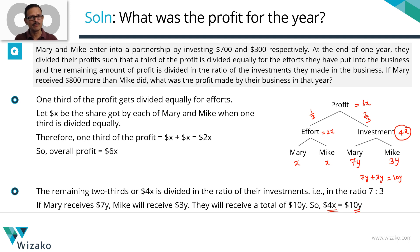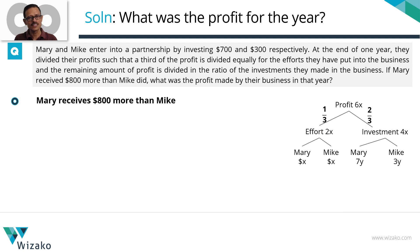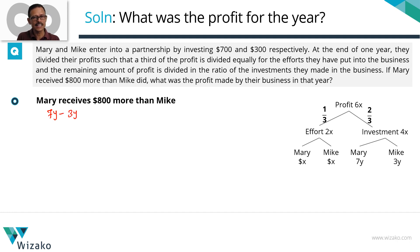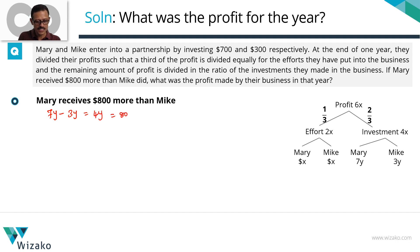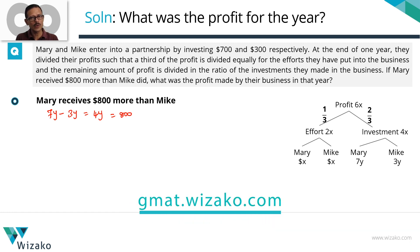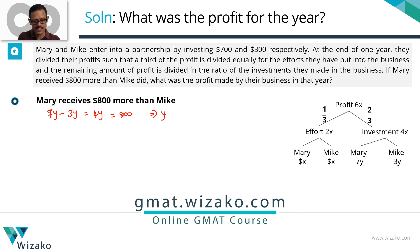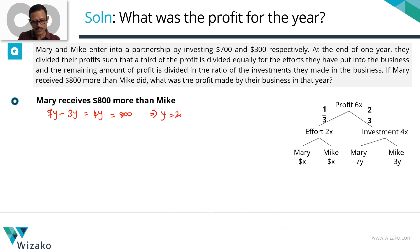The difference that Mary got more than Mike is on account of 7y minus 3y. Mary took home 7y for investments, Mike took home 3y. So the extra that Mary takes home is equal to 4y dollars, which according to the question equals 800 dollars. If 4y equals 800, then y equals 200 dollars.